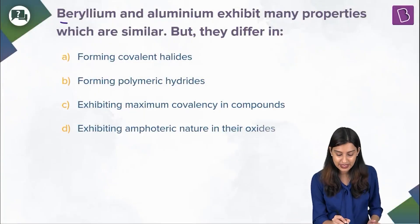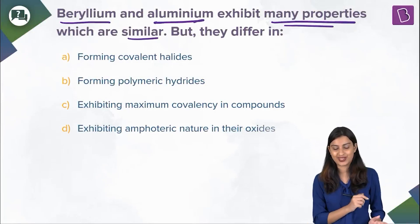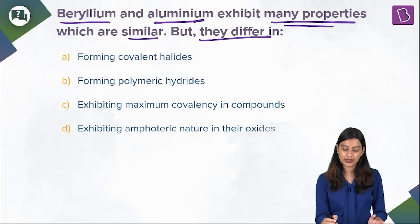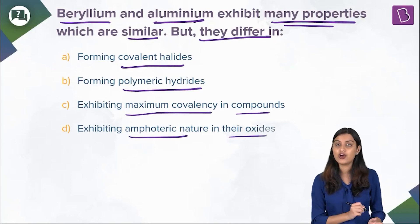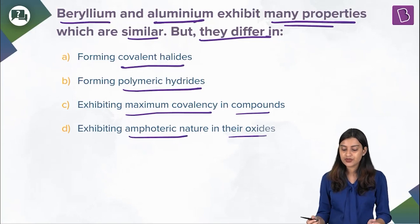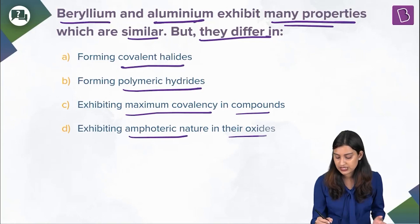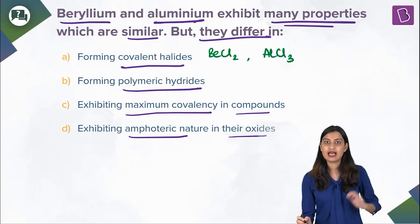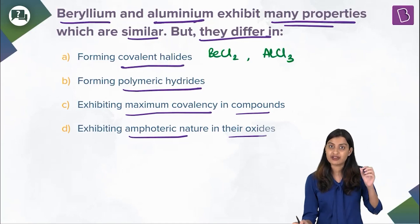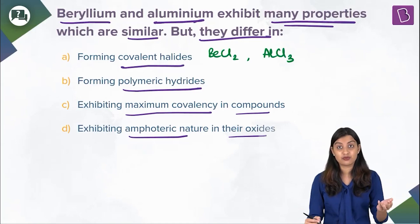Here they're saying that beryllium and aluminium exhibit many properties which are similar, but they differ in: forming covalent halides, forming polymeric hydrides, exhibiting maximum covalency in compounds, and exhibiting amphoteric nature in their oxides. Let's explore this one by one. Forming covalent halides — BeCl₂ is a halide of beryllium and AlCl₃ is the corresponding halide of aluminium. These two are definitely covalent in nature, so this is correct — they do exhibit similar properties when it comes to forming covalent halides.